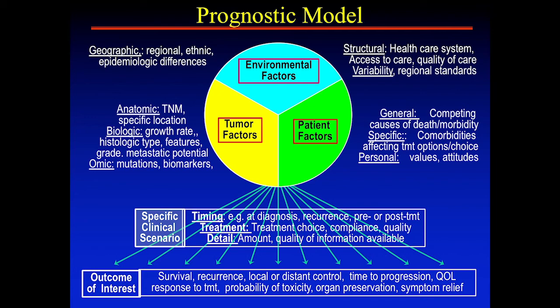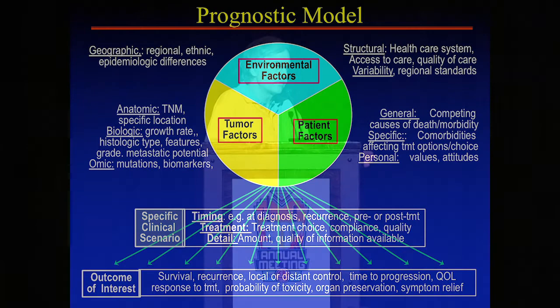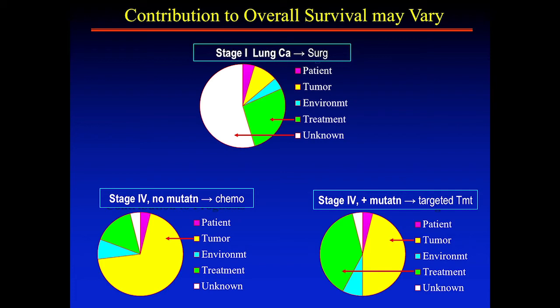It also depends on what your outcome of interest is — recurrence, survival, potential for toxicity — and on when you're assessing it. Prognosis after resection is different from prognosis a year later, because that patient has already survived a year with no events. For a stage 1 lung cancer, treatment may drive a lot of the outcome, and much is unknown because patients may actually be cured. On the other hand, for a stage 4 patient, tumor-related factors may drive prognosis much more.